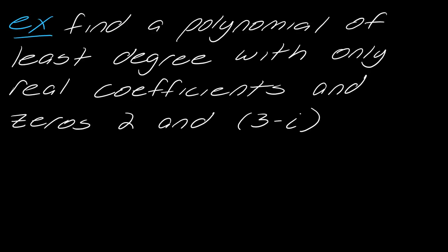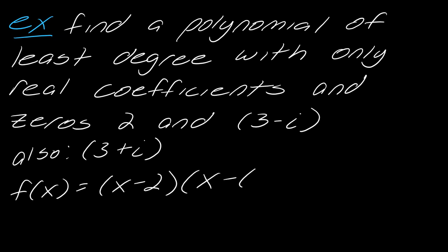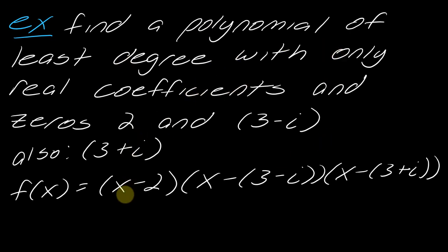Let's find a polynomial of least degree with only real coefficients and zeros 2 and 3 minus i. Since we need real coefficients, the conjugate zeros theorem guarantees we also have 3 plus i as a zero. So the polynomial of least degree looks like: f(x) = (x minus 2)(x minus (3 minus i))(x minus (3 plus i)).